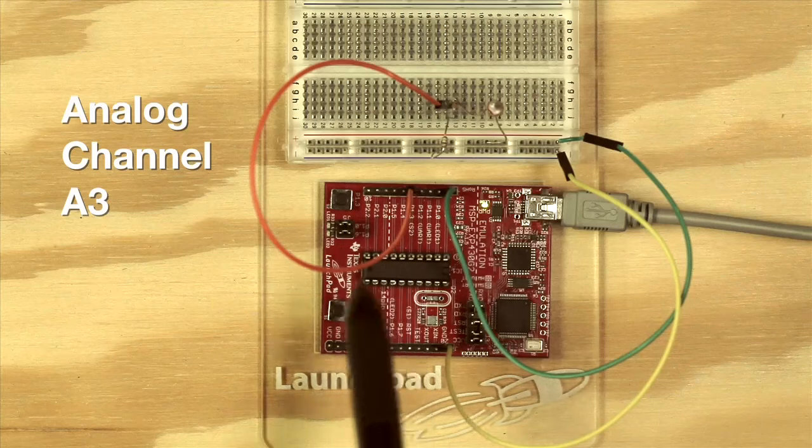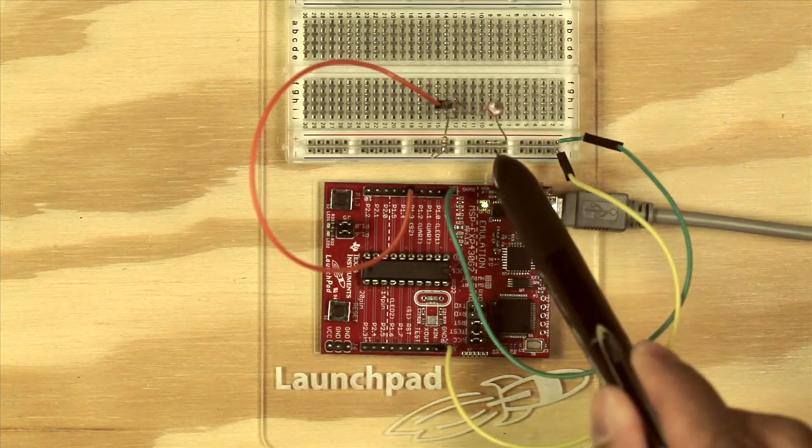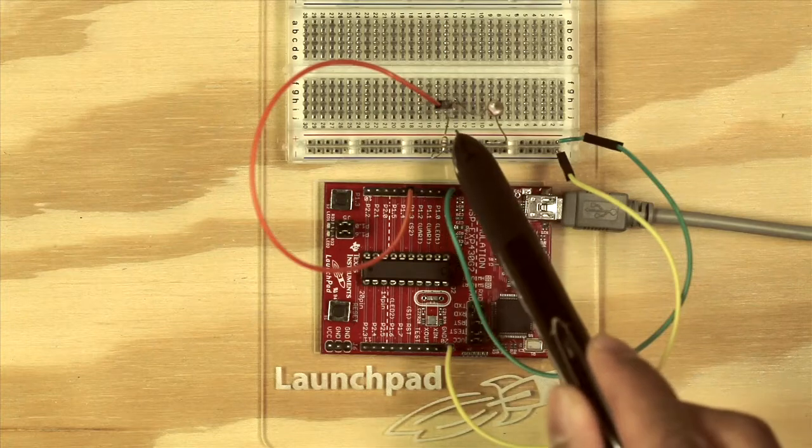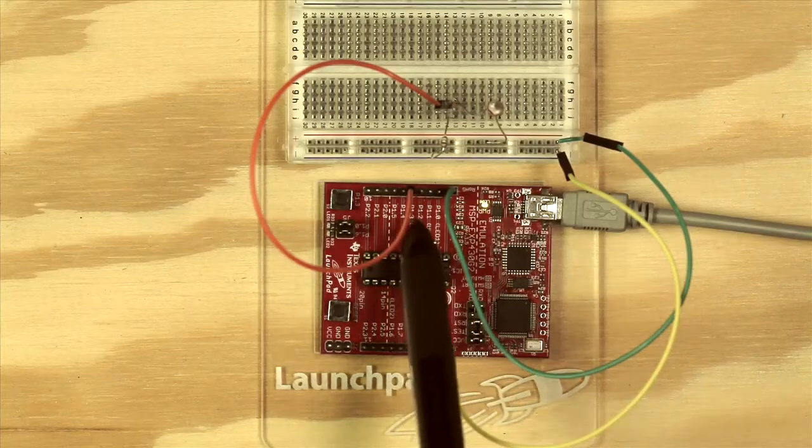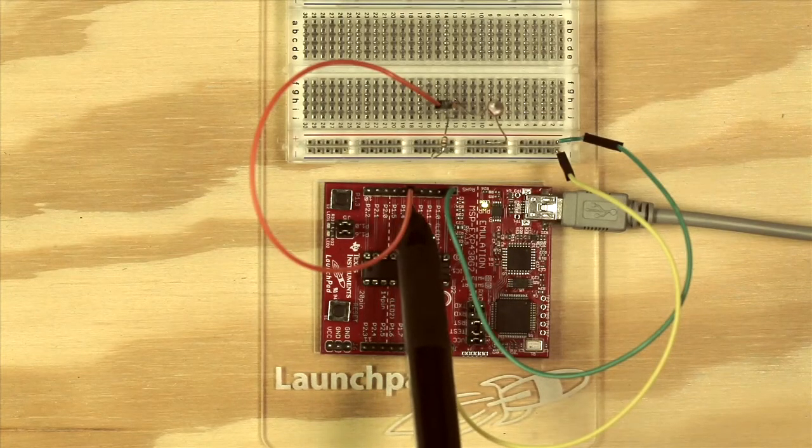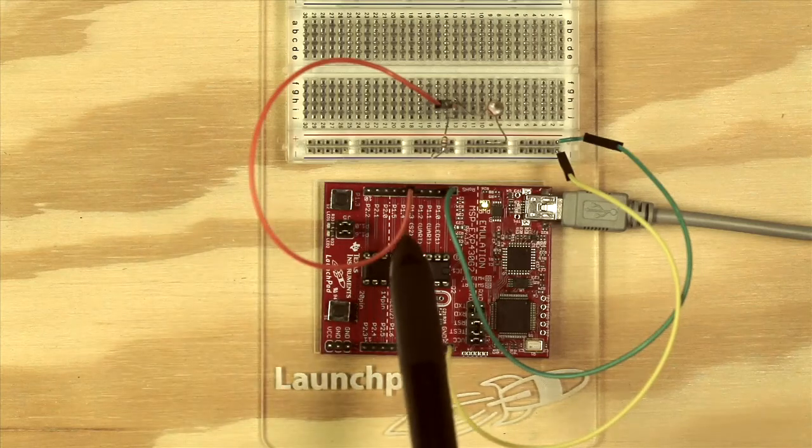To hook up our photodiode, we have one terminal connected to VCC and another terminal connected to ground via a 10k ohm resistor. We'll read the analog values coming from the photodiode by connecting a wire from our analog channel A3 to the leg of the photodiode that is connected to ground via the resistor.